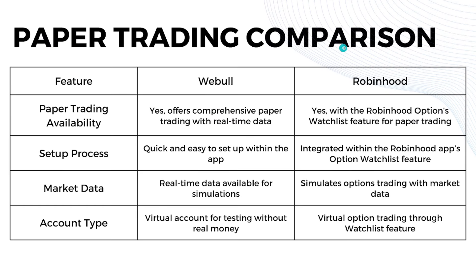When it comes to paper trading availability, Webull offers comprehensive paper trading with real-time data, while Robinhood also offers paper trading through its new options watchlist feature. For the setup process, Webull is very quick and easy to set up within the app, while Robinhood has it integrated within the app's option watchlist feature. For market data, Webull provides real-time data available for simulations, while Robinhood simulates option trading with market data.